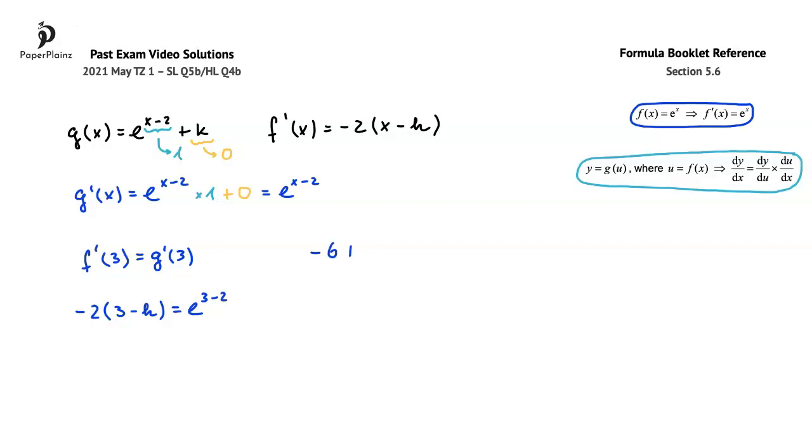Working further gives us that negative 6 plus 2h equals e to the power of 1, or simply e. From here, we just have to rearrange to get that h equals e plus 6 over 2. This is what we wanted to show.